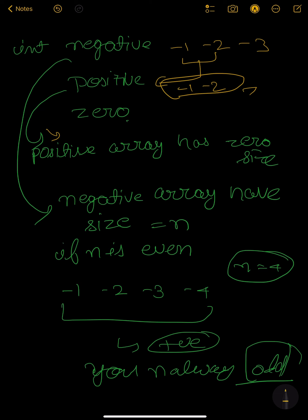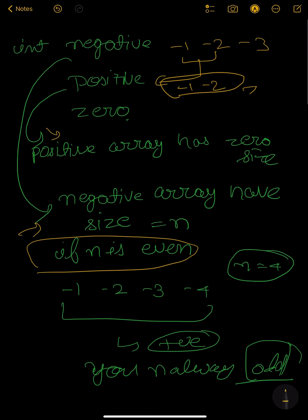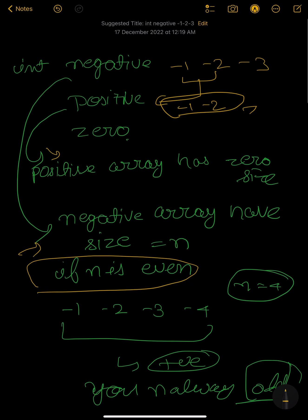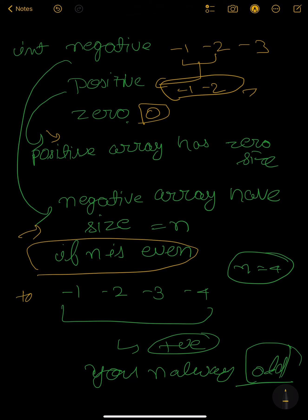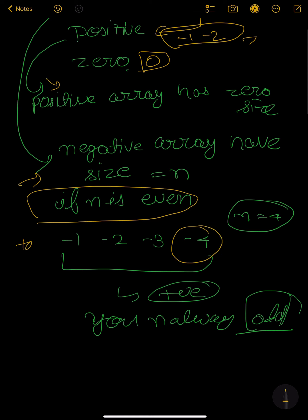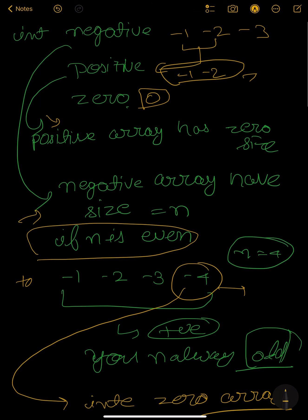If the negative array has even size n, you simply take the last element from the negative array and put it into the zero array — because zero multiplied by any number always gives zero. Sending a negative element into the zero array has no effect on the product of the zero array. So to make n odd, you simply move the last negative element into the zero array.